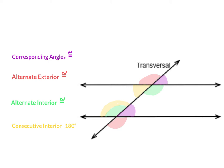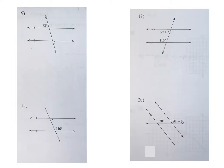That whole first page is really just naming those angle types. You're going to get a picture and tell me what you have. The second page is actually calculating them, so you need to know what you have in order to know how to calculate it.